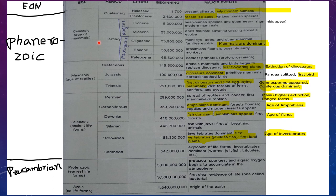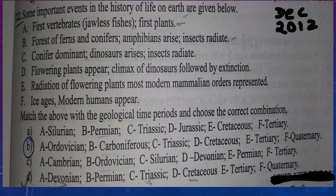Let's see one question from December 2012. The question is: some important events in the history of life on Earth are given below. Statement A: first vertebrates, jawless fishes, first plants. B: forest of ferns and conifers, amphibians arise, insects radiate. C: conifers dominant, dinosaurs arise, insects radiate. D: flowering plants appear, climax of dinosaurs followed by extinction. E: radiation of flowering plants, most modern mammal orders represented. F: ice ages, modern humans appear. Match the above with geological time periods and choose the correct combination.